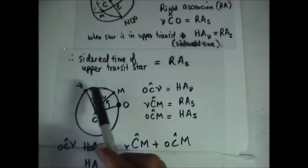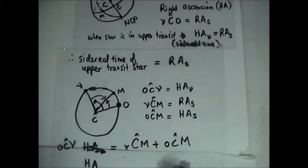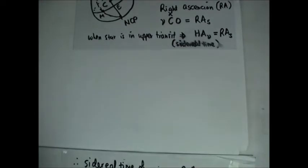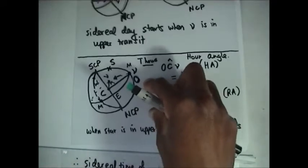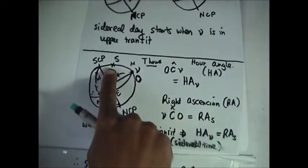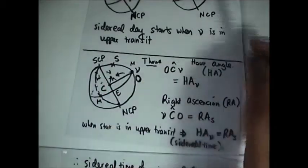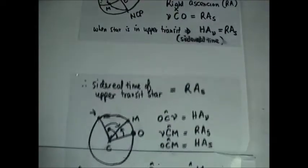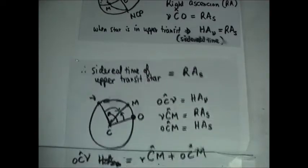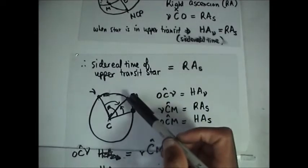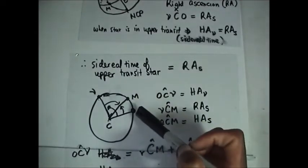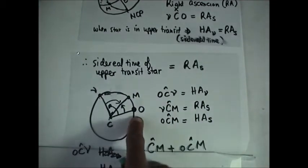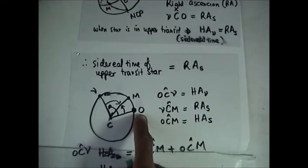In our initial case we had T hours, and then the star S was in upper transit. But now we are considering a case where it's another time that is greater than T hours, when V has moved and the star has moved from upper transit. When the star is moved from upper transit, the point M is now not coinciding with O.